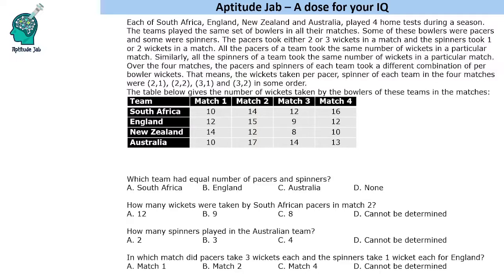All the pacers of a team took the same number of wickets in a particular match. Let us say there are two pacers in a team — both will take either three wickets or two wickets. Similarly, all the spinners of a team took the same number of wickets in a particular match, so all of them might have taken three, two, or one wicket.